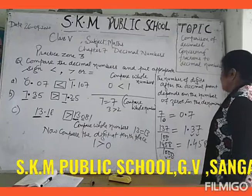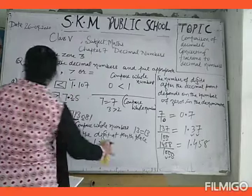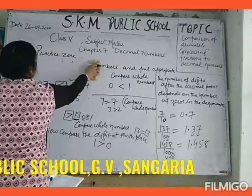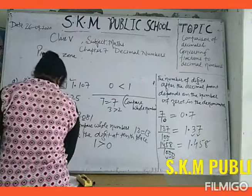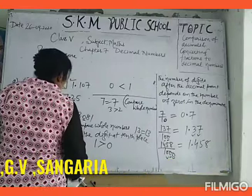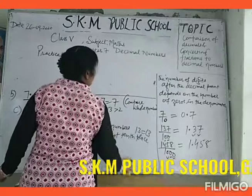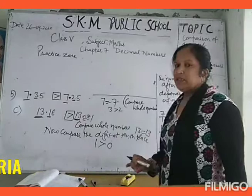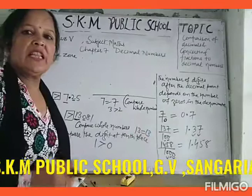Now in practice zone number 4 you are asked to convert the fractions into decimals. The rule is: the number of digits after the decimal point depends upon the number of zeros in the denominator.